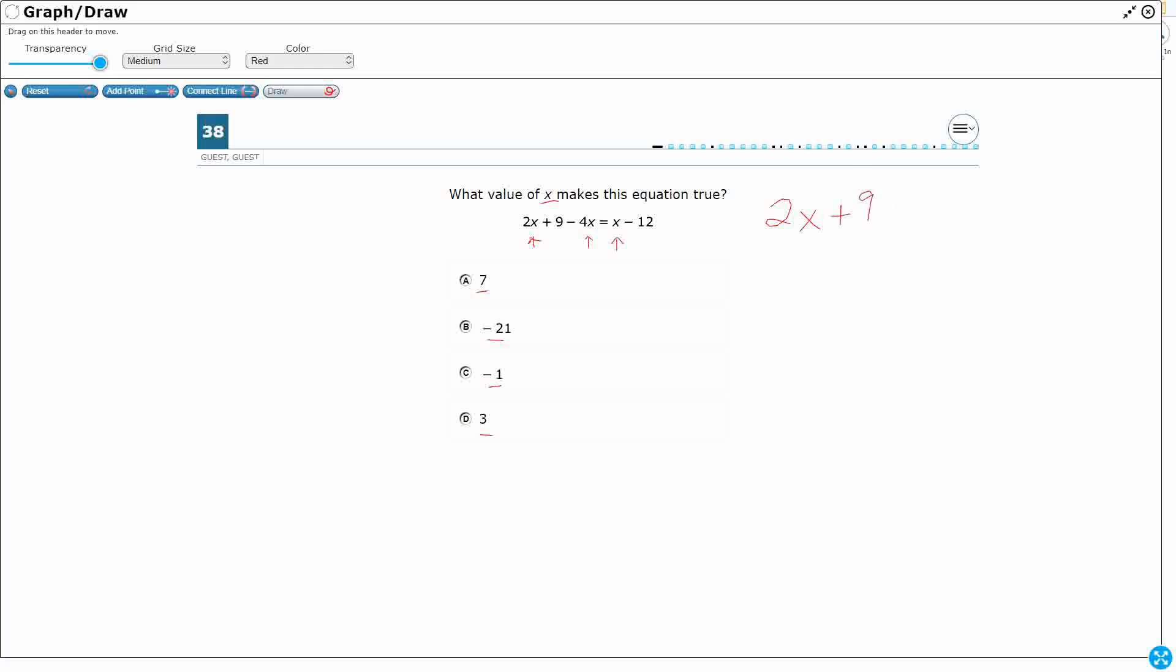So 2x plus 9 minus 4x equals x minus 12. Our goal here is to isolate x. We want to get x by itself. So first off, take a look on this left side. I've got two x's right here. I need to combine these two x's. What I want to do is rewrite this so that we get these next to each other. I'm just going to use the commutative property to flip the order of those two.